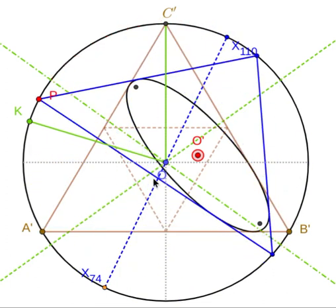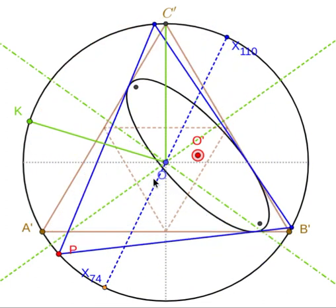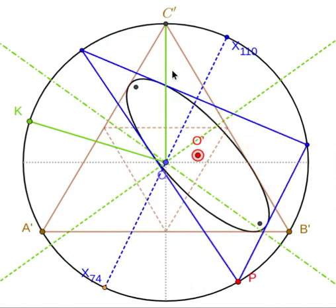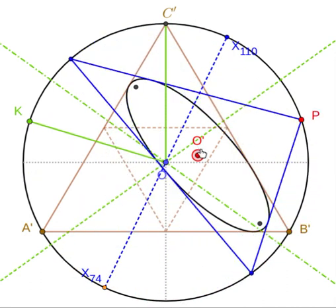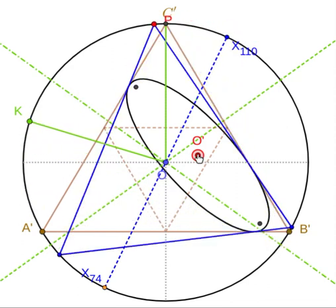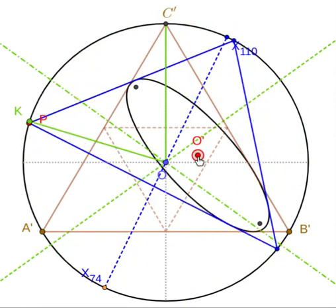In the previous video we described a property of Poncelet triangle families inscribed in a circle and circumscribing some generic caustic centered on O, this red O' in this particular labeling here.